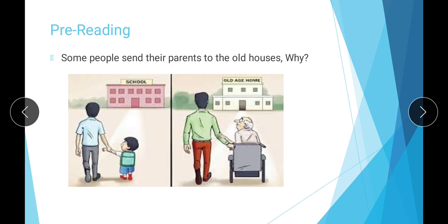Another reason is that if the man of the house is married to a woman who is not happy living with the old man, she may compel her husband to send the old man to the old house. This also varies from culture to culture. In the modern era, especially in Europe, it is very normal for parents to send children to daycare, and when those children grow up and become middle-aged, they send their own parents to old people's homes, governed by the government.